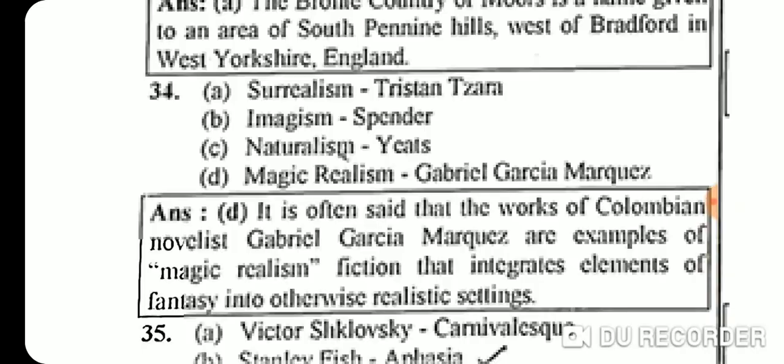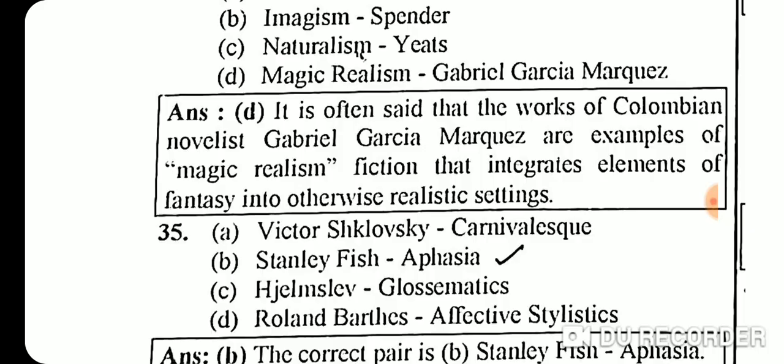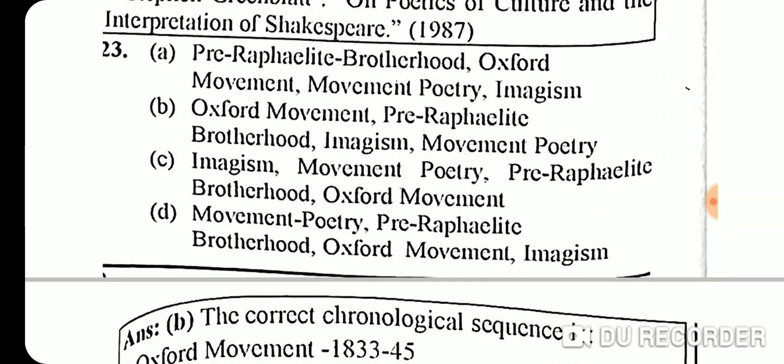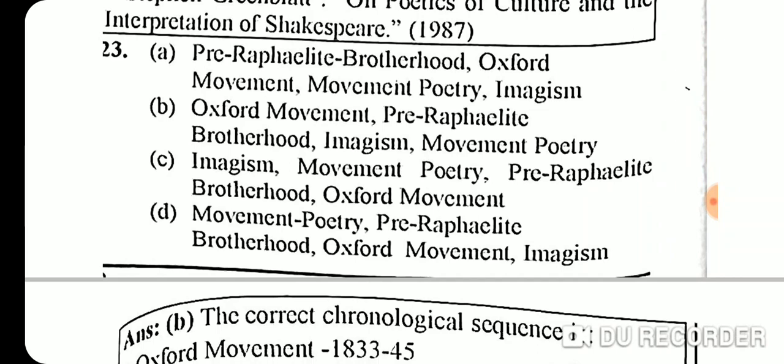This is all about the 2005 UGC NET JRF Exam Paper 2, and all 50 questions have been discussed. If you have any doubts or feel any option needs checking, please write in the comment section. The goal is to cover at least 10 years of previous papers before the exam. Take care of yourself and your family. Stay blessed, and thank you for watching.